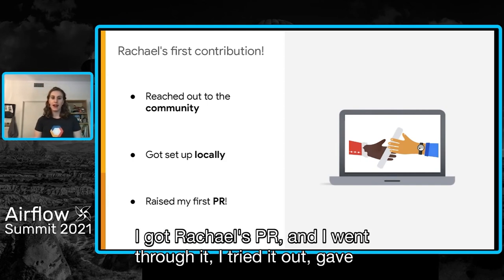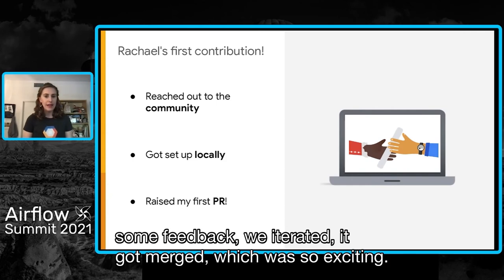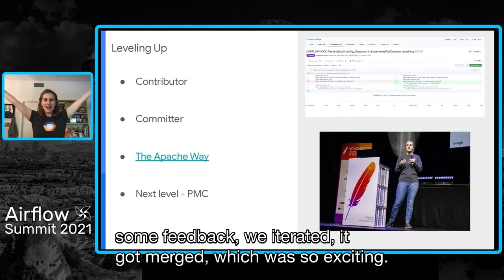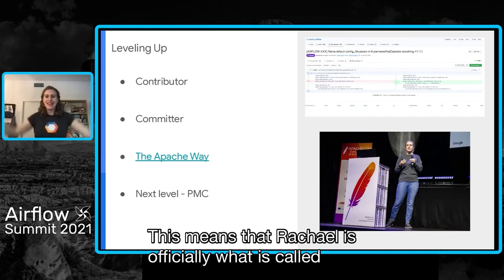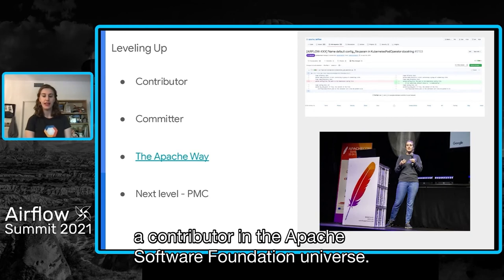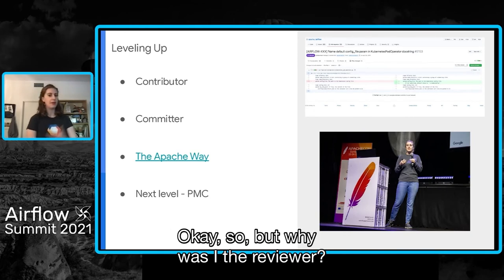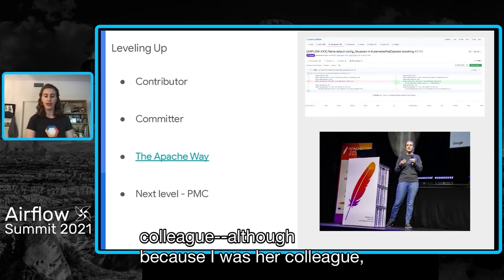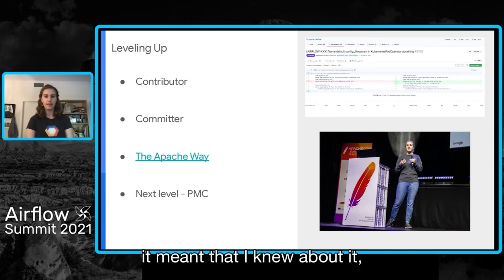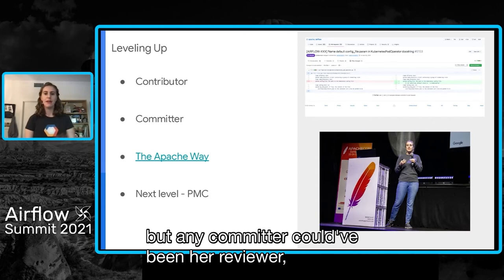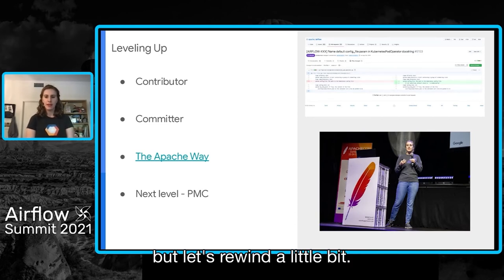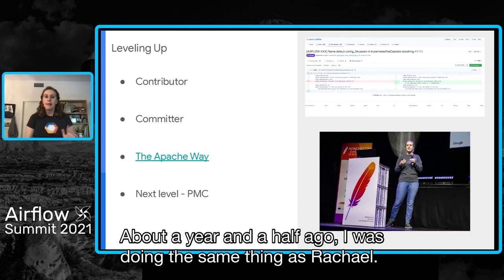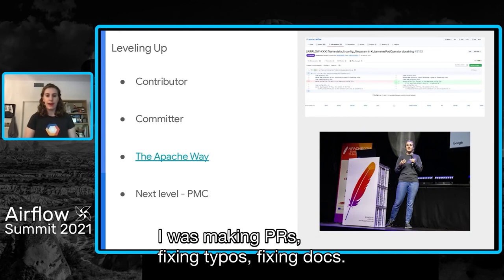I got Rachel's PR, went through it, tried it out, gave some feedback, we iterated, and it got merged — which is so exciting! This means that Rachel is officially what is called a contributor in the Apache Software Foundation universe. Why was I the reviewer? It's not just because I was her colleague — any committer could have been her reviewer — but let's rewind a little bit. About a year and a half ago I was doing the same thing as Rachel: making PRs, fixing typos, fixing docs.